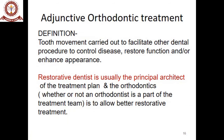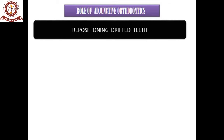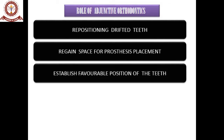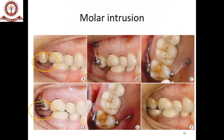Adjunctive orthodontic treatment is tooth movement carried out to facilitate other dental procedures, to control disease, restore function, or enhance appearance. Here the orthodontist is not the principal architect — the restorative dentist is usually the principal architect of the treatment plan, and orthodontics is done to allow better restorative treatment. The roles of adjunctive orthodontics include repositioning drifted teeth, regaining space for prosthesis placement, establishing favorable tooth positions, eliminating plaque-retentive areas, and relieving periodontal, occlusal, and TMJ problems.